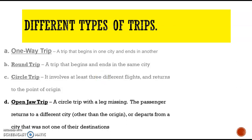Open jaw. This is just like the circle trip; however, there is a leg missing. The passenger returns to a different city other than the origin, or departs from a city that was not one of their destinations.